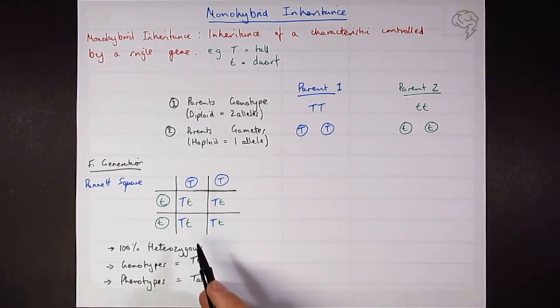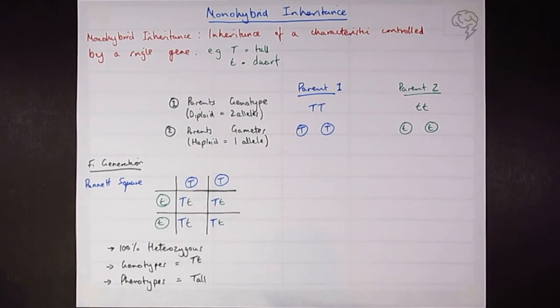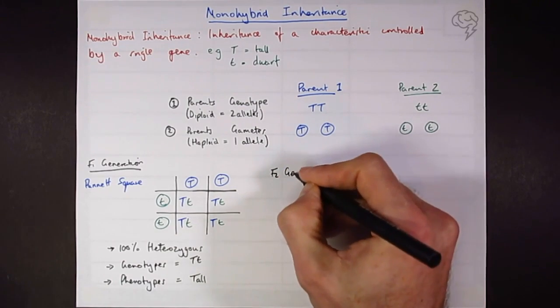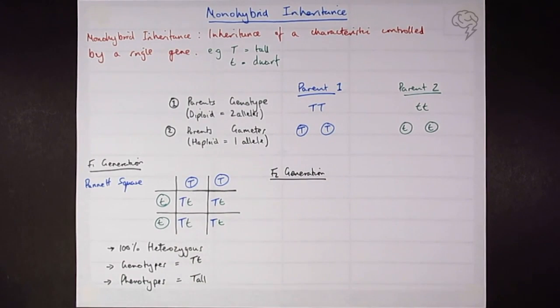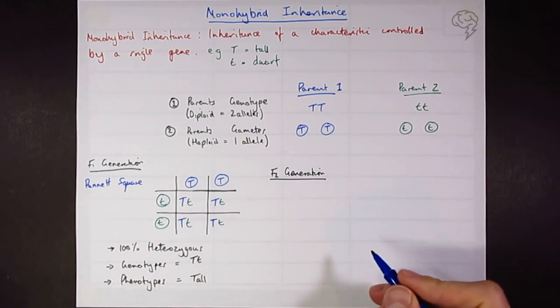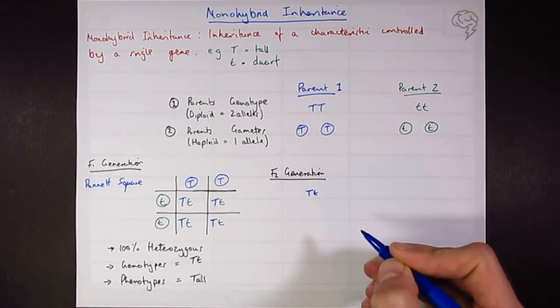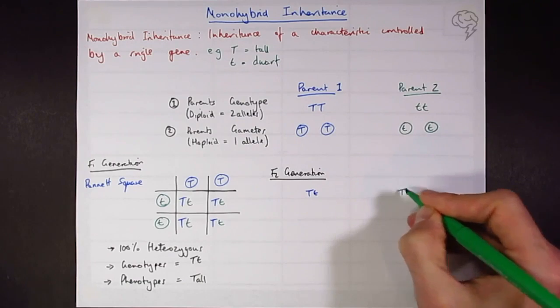But what we get when we get a bit more interesting is that we can cross the F1 generation with themselves, and we can produce what we call the F2 generation, the second filial generation. And this is when we can start to see some trends coming through. So again, I'm going to use my parent one and my parent two, and I'm going to draw them in the respective colors. So I'm now going to forget my blue and green from over here. I'm going to represent parent one is heterozygous. It's going to be in blue. And parent two is going to be heterozygous represented in green.